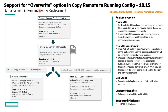Support for override option in copy remote to running config. This is an enhancement in running config replacement via CLI. By default, the CLI configuration included in the config file is put on top of the running config rather than replacing the existing running config.